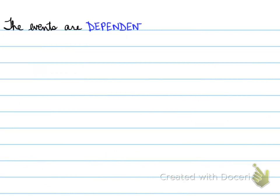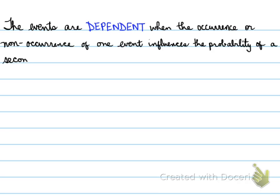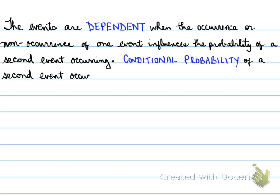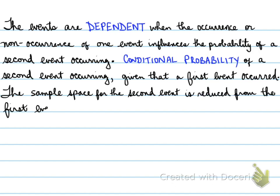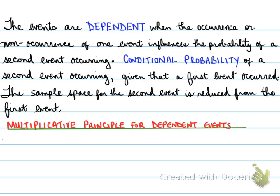Events are dependent when the occurrence or non-occurrence of one event influences the probability of the second event occurring. That is known as conditional probability — the conditional probability of a second event occurring given that a first event occurred. The sample space for the second event is reduced from the first event. The multiplicative principle for dependent events: the probability of A and B equals the probability of A times the probability of B, given that A has occurred.